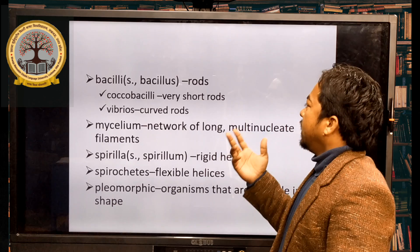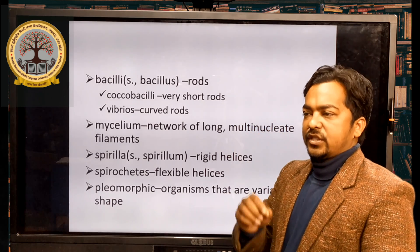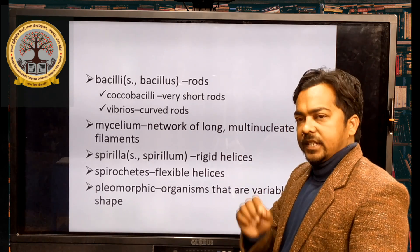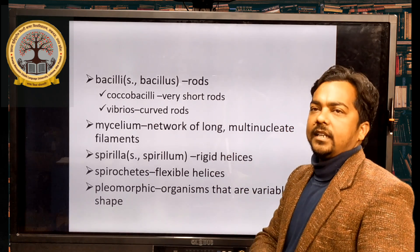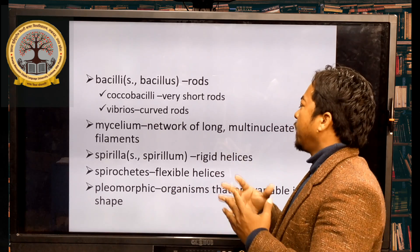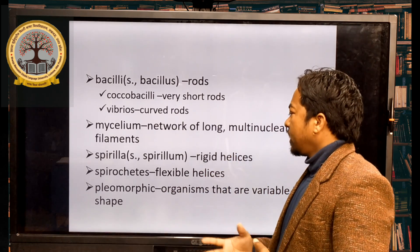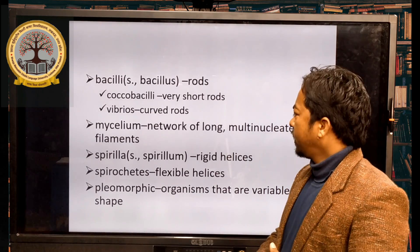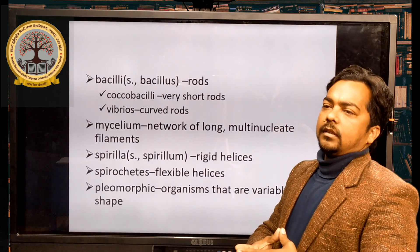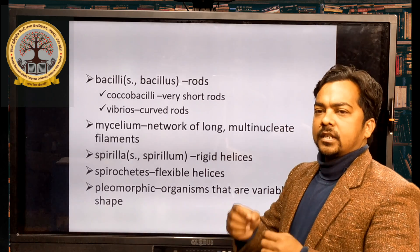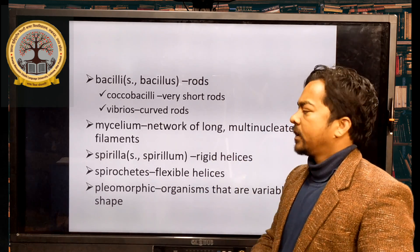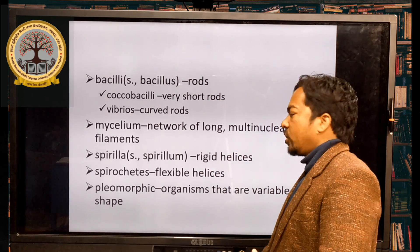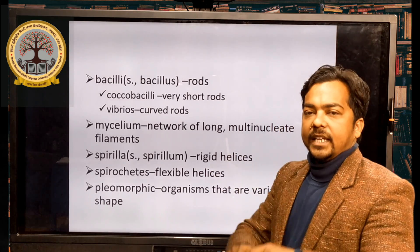Spirilla — prokaryotic cells can also be arranged as rigid helix, known as spirilla. There are also spirilla sheets and flexible helix forms. Pleomorphic organisms are variable in shape — they can be spheres, rods, comma-shaped, cubic form, or multinucleate filaments, but pleomorphic organisms are variable in shape.